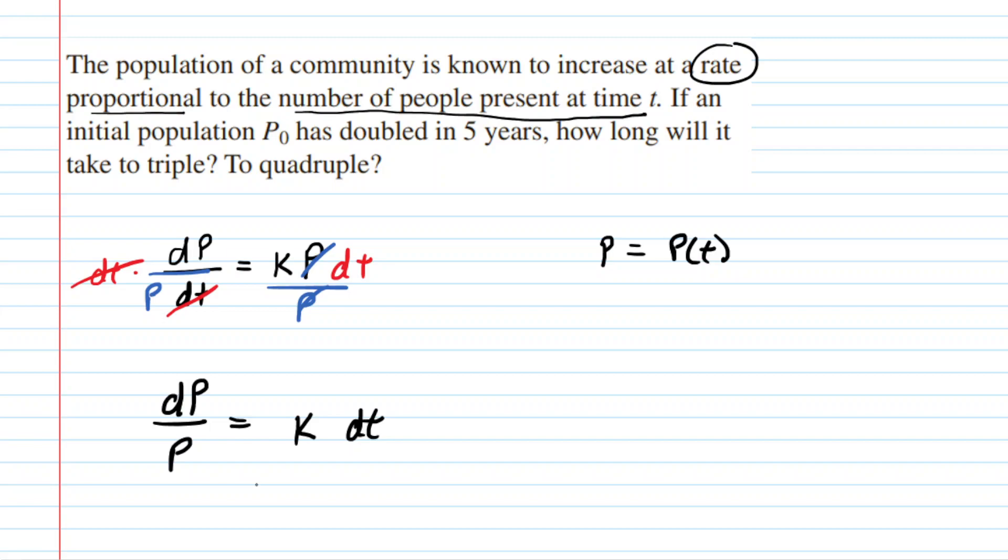Now, our goal is to solve this for the population, for P. To do that, we simply integrate both sides of this equation after we have separated the variables.